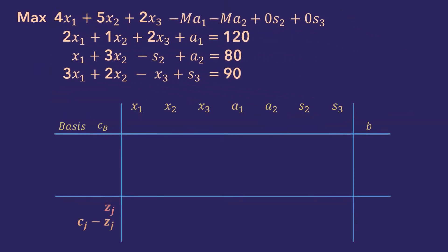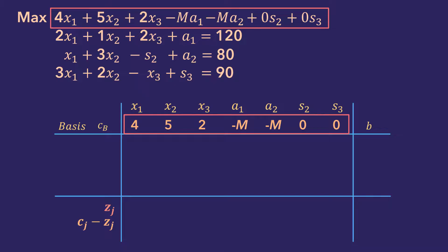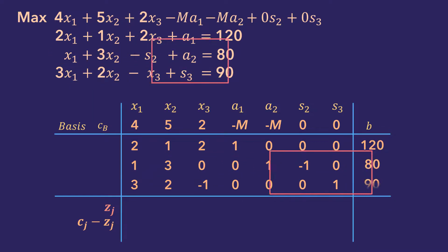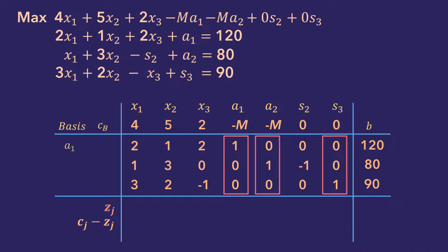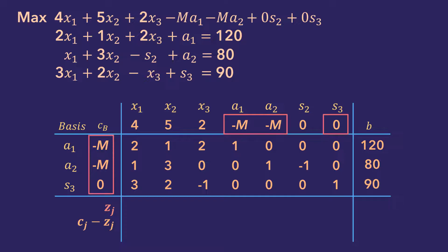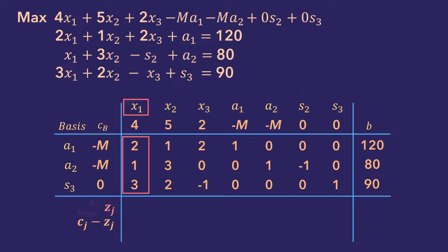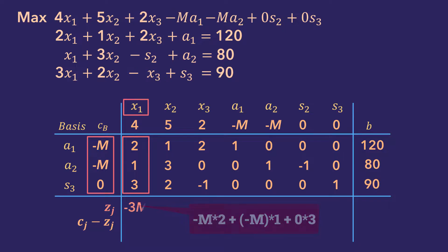Setting them up in the simplex tableau, we have the objective function coefficients in the top row, the coefficients of the first equation, the second equation, and the third, and we have the right-hand sides in the b column. Recall that the variables with unit columns are the basic variables, namely a1, a2, and s3, with objective coefficients minus m, minus m, and 0 respectively. Note that only the artificial variables and the slack are basic variables in the initial tableau. Since surplus variables have a minus 1 coefficient, they will not be basic in the initial tableau. The zj value for the x1 column is calculated as minus m times 2 plus minus m times 1 plus 0 times 3, which gives minus 3m.